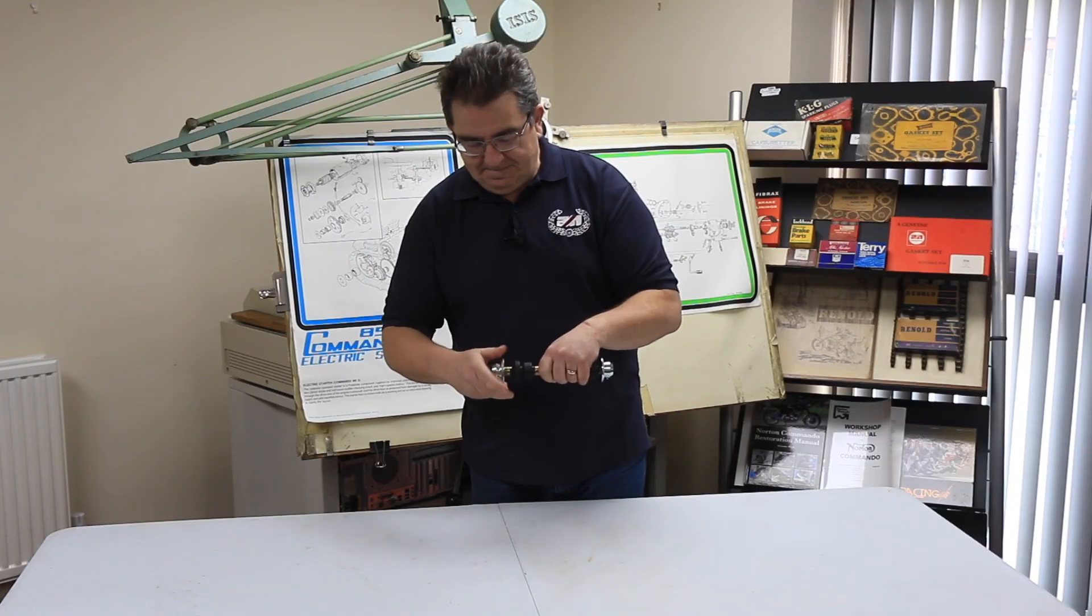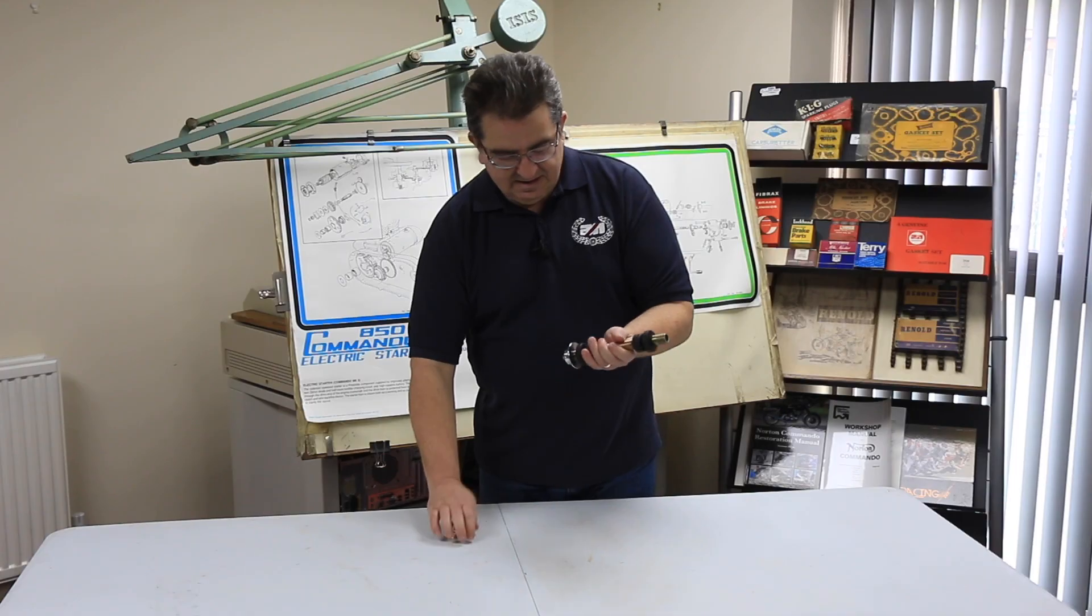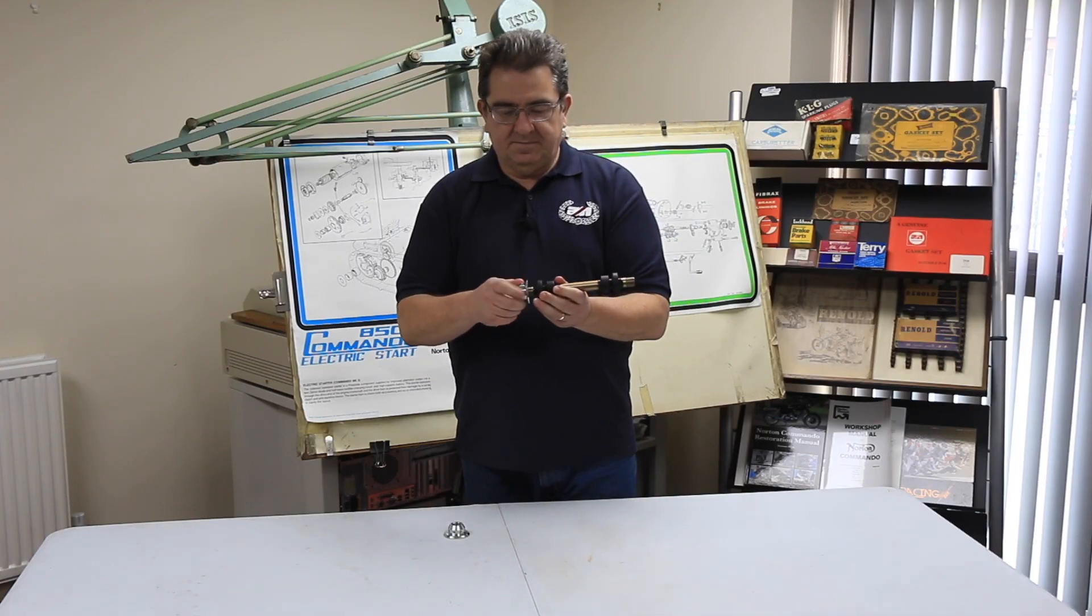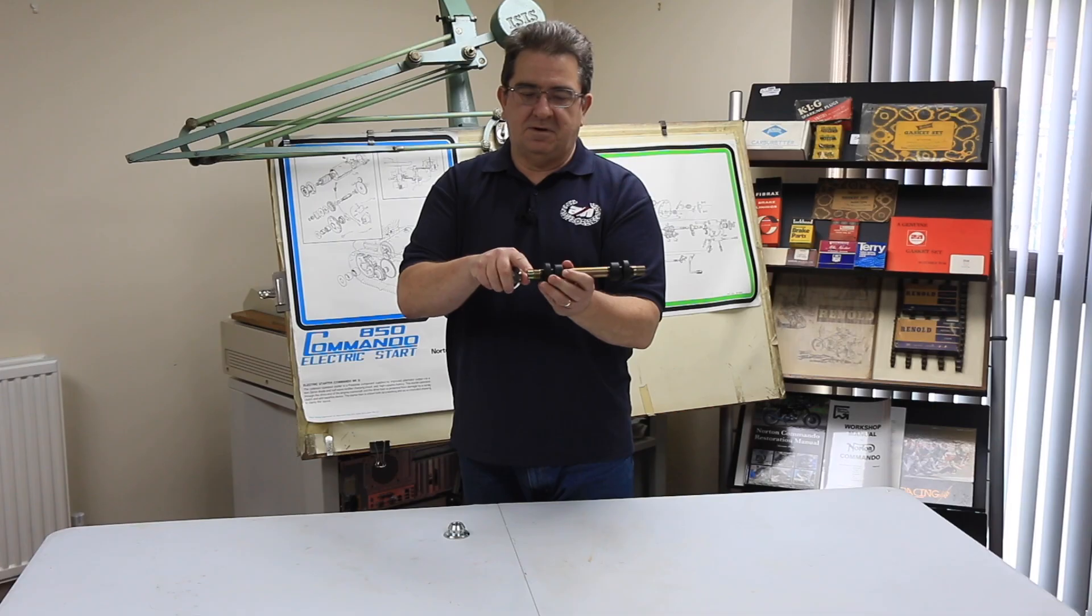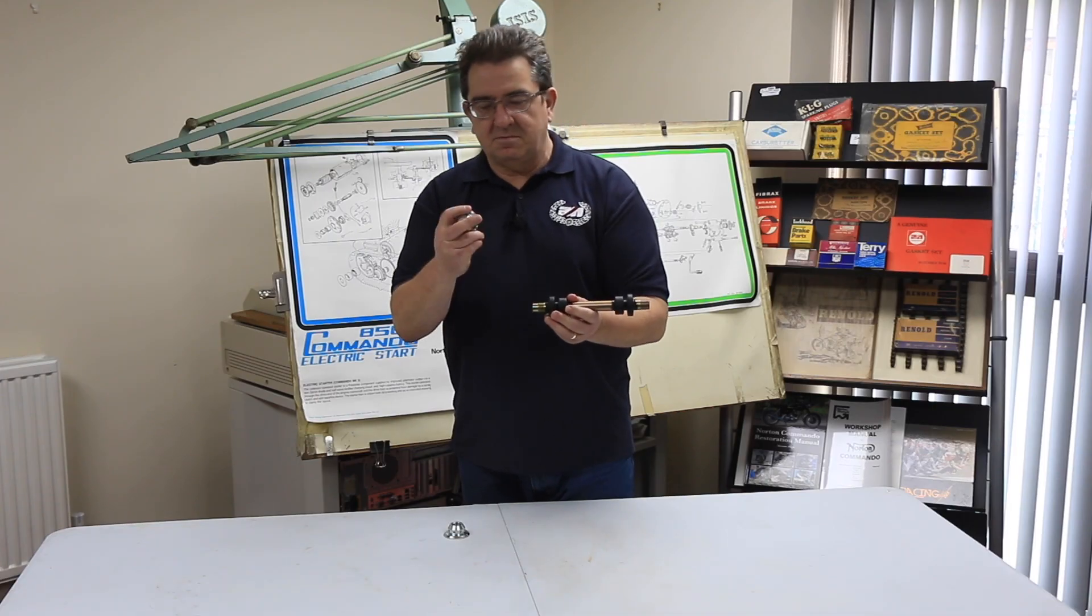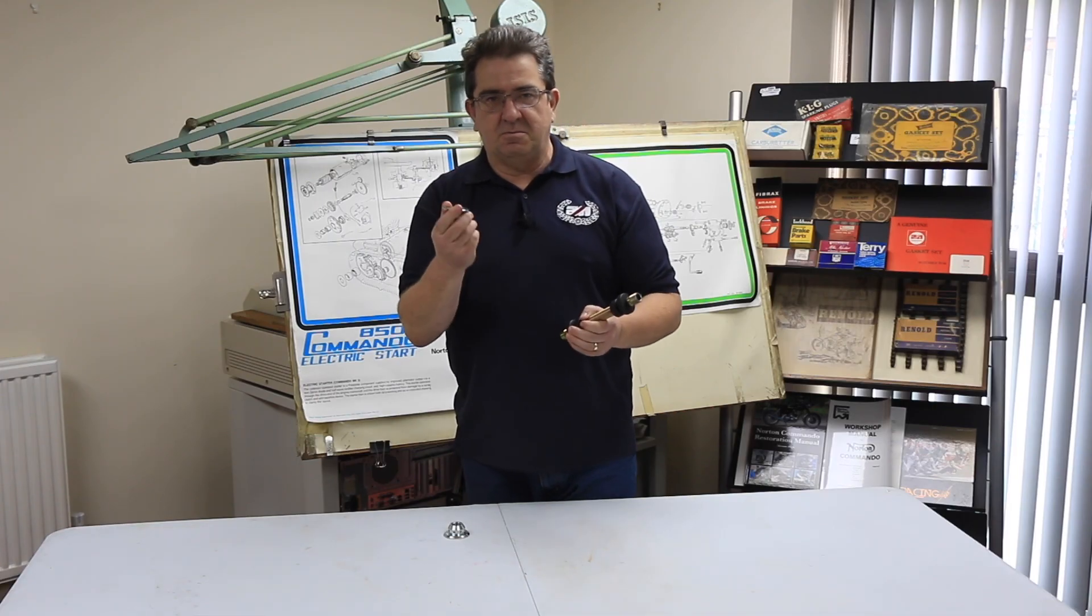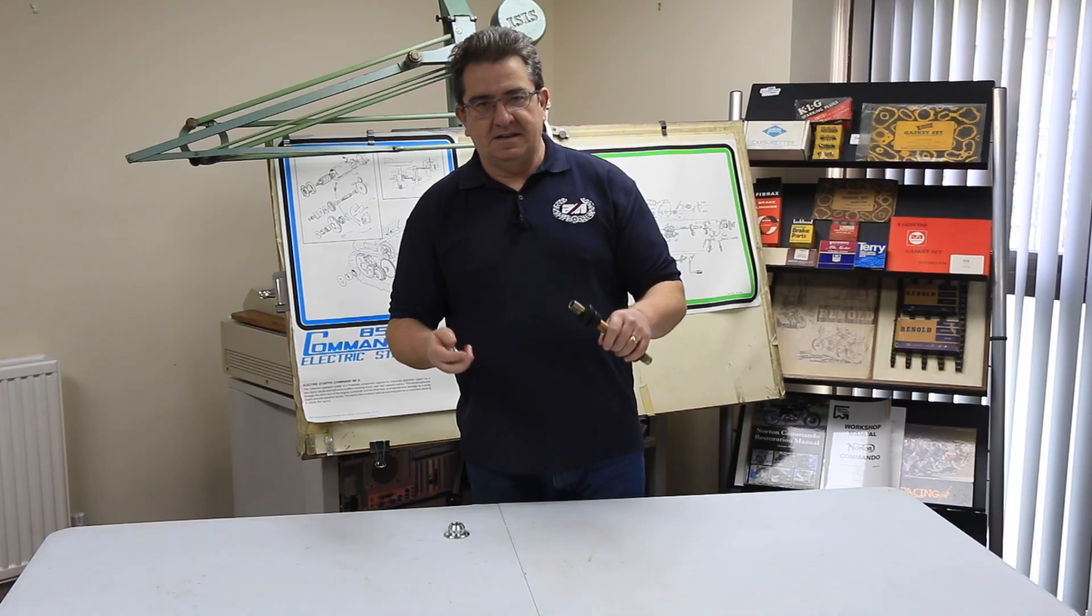So the way I remember it is the grub screw goes on to the blank portion where there's no thread. If you remember that, you'll get the ends on the right way around. When you go to put it in, it will go straight in.